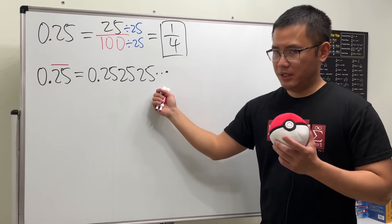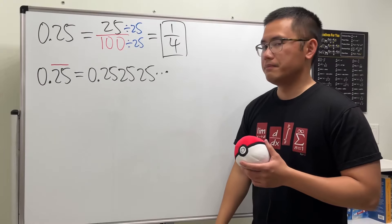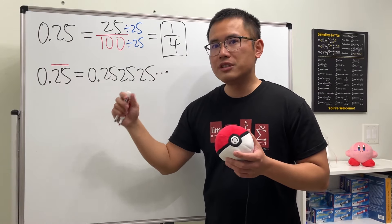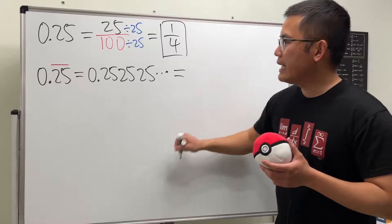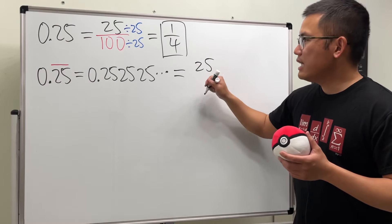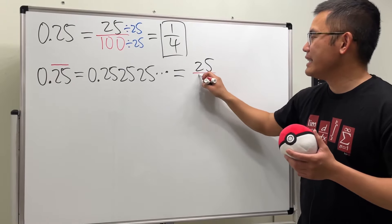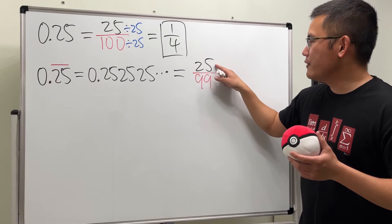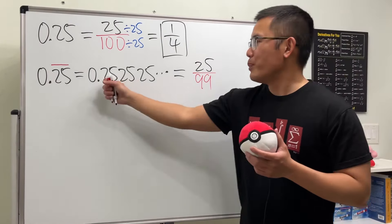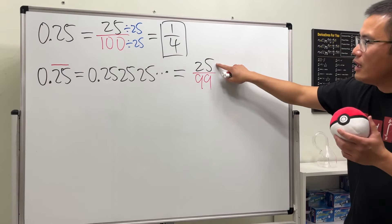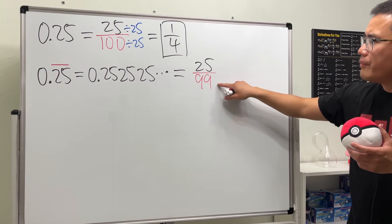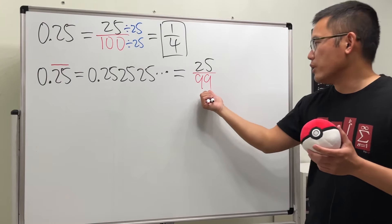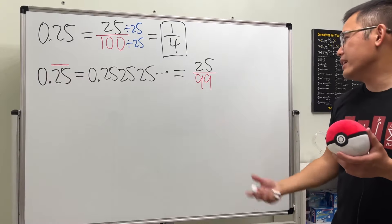And this does happen. Here's how you can see it: you have two digits after the decimal point that are repeating, so put 25 on top and instead of dividing by 100, you divide by 99. Try it on your calculator — 25 over 99 gives you 0.252525 forever.